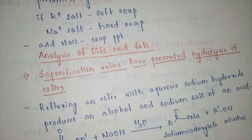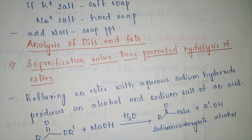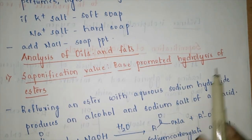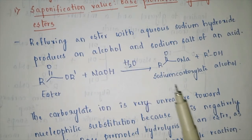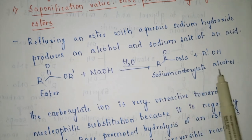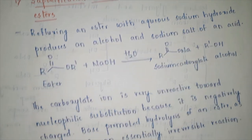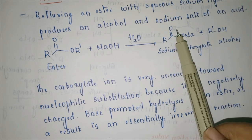To analyze oils and fats, certain values are used. One such value is the saponification value — this is base-promoted hydrolysis of an ester. We reflux the ester in the presence of base and water to get the respective sodium carboxylate and an alcohol.